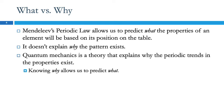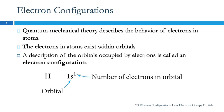The periodic law allows us to predict what the properties of an element are based on its position, but it doesn't explain why. That's why it's a law and not a theory. Quantum mechanics is a theory, and it explains why those property trends exist. When we know why, then we can predict what. So theories are much more powerful.